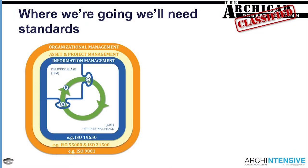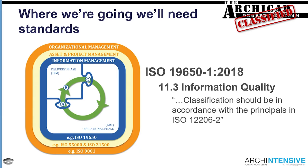So where we're going, we're going to need some standards. I've only heard one reference so far today to ISO 19650. It's been the big flavour for the last handful of months while it's been out there. There's been lots of discussion around implementation of 19650. This is a great graph that comes out of that standard, talking about where all these standards sit within each other. We end up with ISO 9001 at the outer edge for organizational management, and we work our way slowly into ISO 19650, which within its information quality sections talks very specifically about classification — it should be in accordance with the principles in ISO 12006 part two.